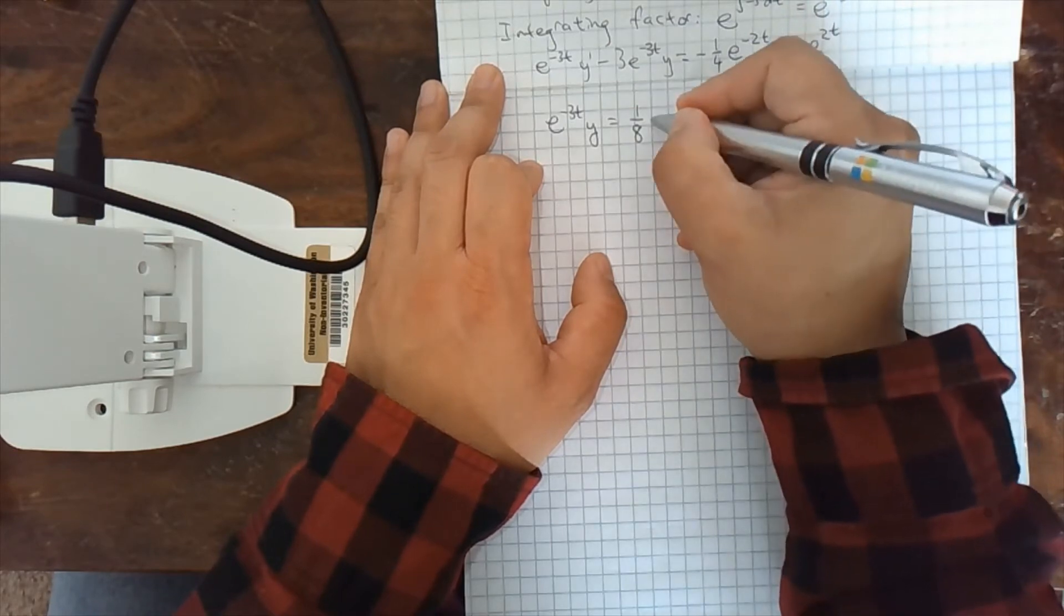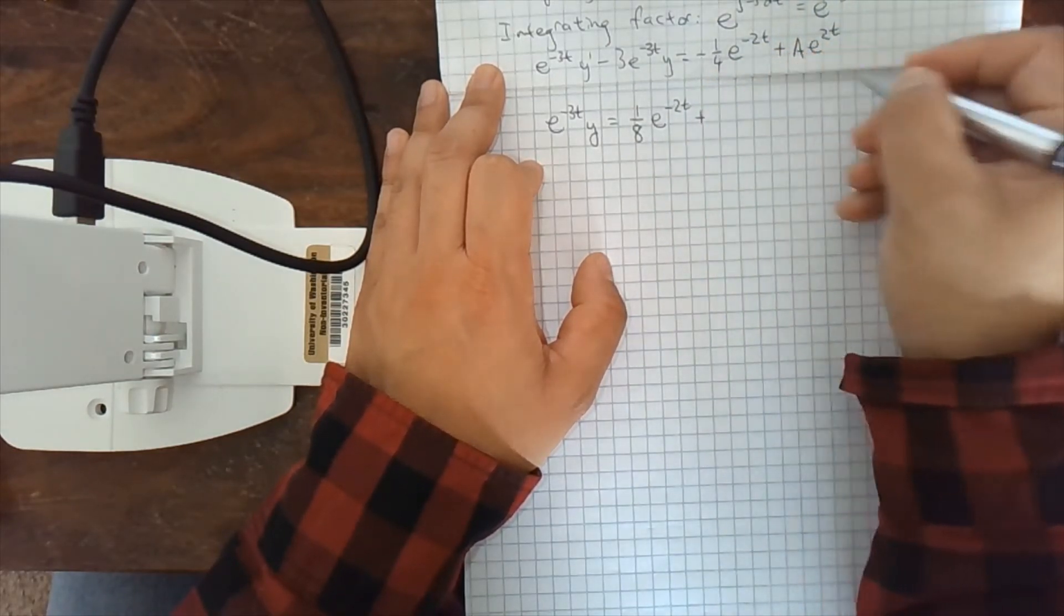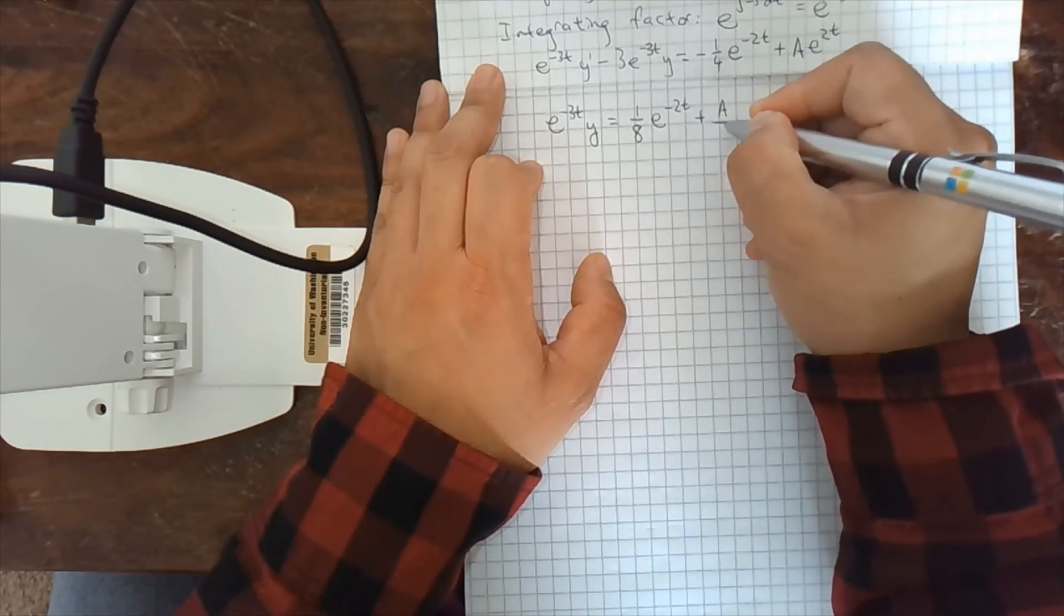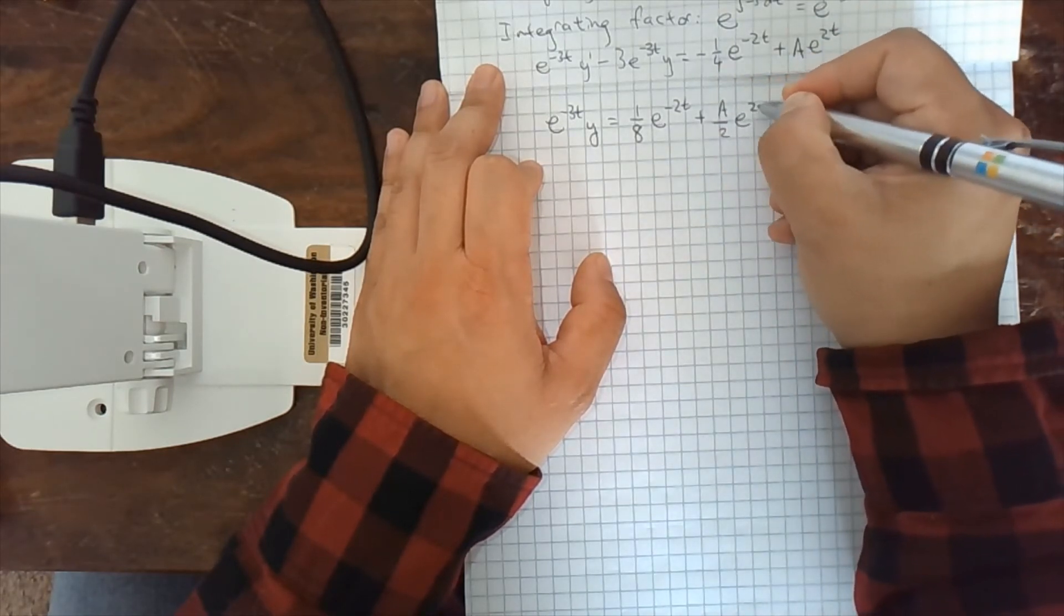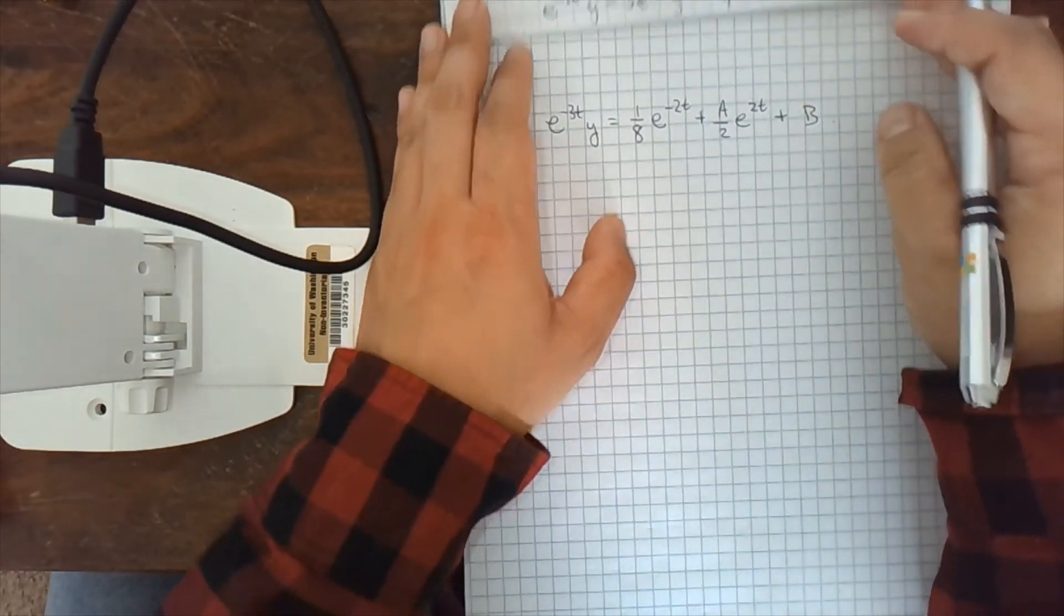So that's positive 1 eighth e to the minus 2t plus, and then this is a divided by 2 e to the 2t plus a constant. The next constant will be b.